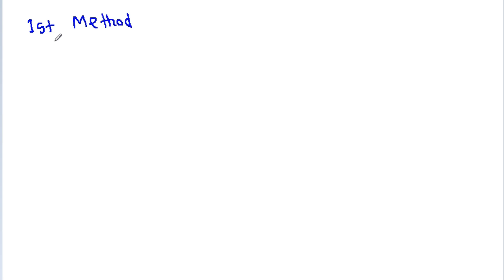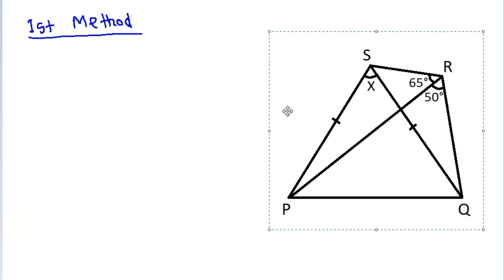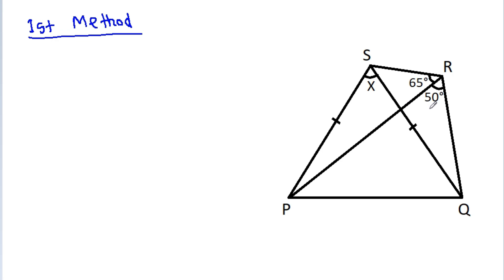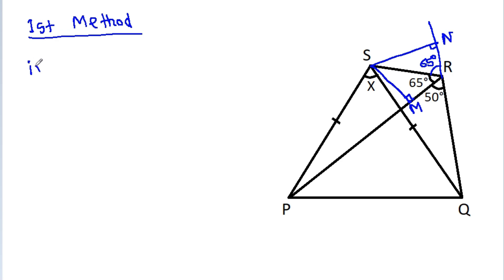First method: if we extend QR, then this angle will be 65 degrees. Now, if we draw a perpendicular from S onto PR, suppose this point is M, and onto QR, suppose this point is N.